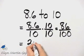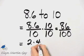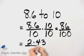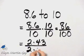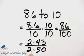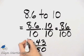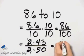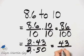86 is 2 times 43. 100 is 2 times 50. And so I can divide out that common factor of 2 and I have 43 over 50.